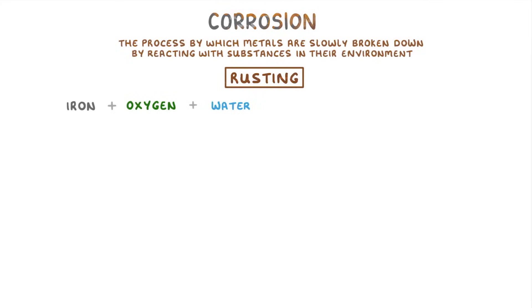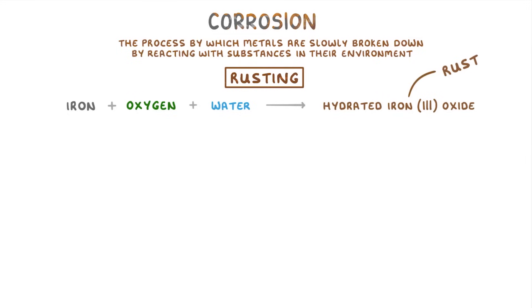Rusting forms hydrated iron oxide, which is more commonly known as rust. If we think about what's happening at the atomic level, the iron atoms in our original block of metal are each losing three electrons to become iron three plus ions.